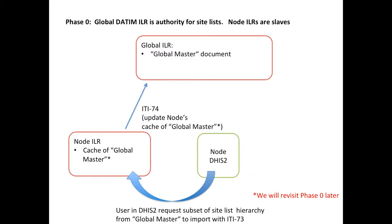When we look at the node instances, they are basically slaves of the global interlinked registry. They use the ITI-74 transaction to update their cache of the global master document. At this point, when the node's ILR cache has been updated, a user in the DHIS2 node instance can request the subset of the site lists hierarchy they're interested in using the ITI-73 transaction.